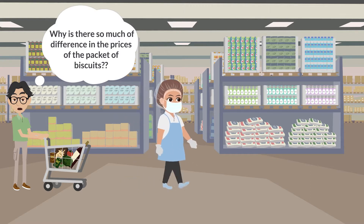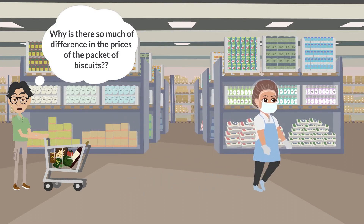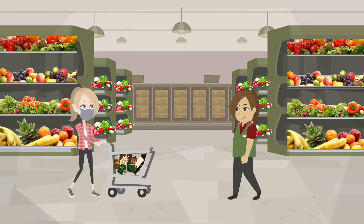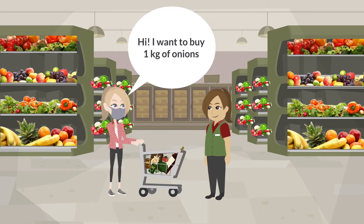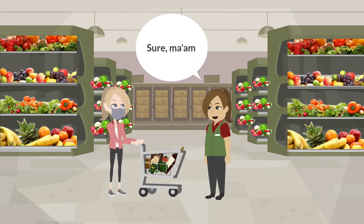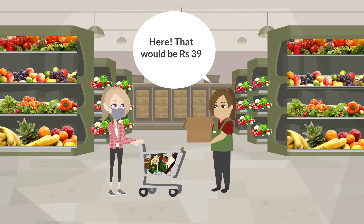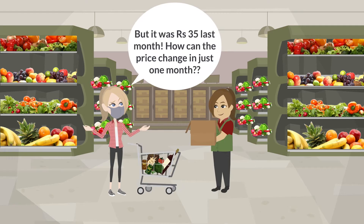Why is there so much difference in the prices of a packet of biscuits? Hi, I want to buy one kilogram of onions. Sure ma'am. Here, that would be rupees 39. But it was rupees 35 last month. How can the price change in just one month?